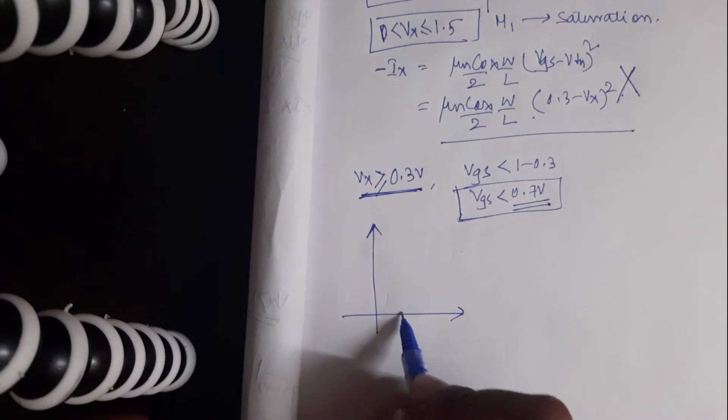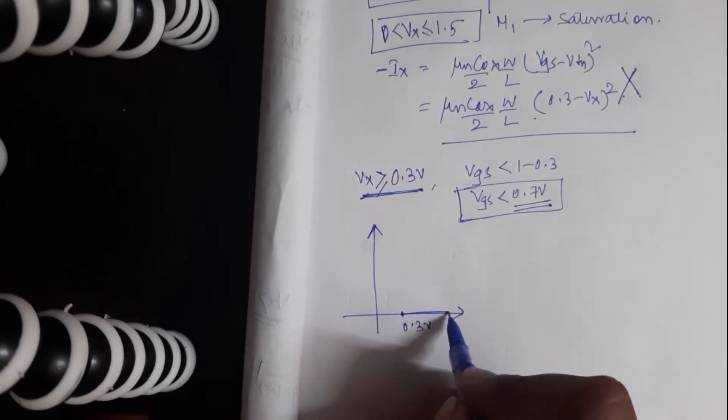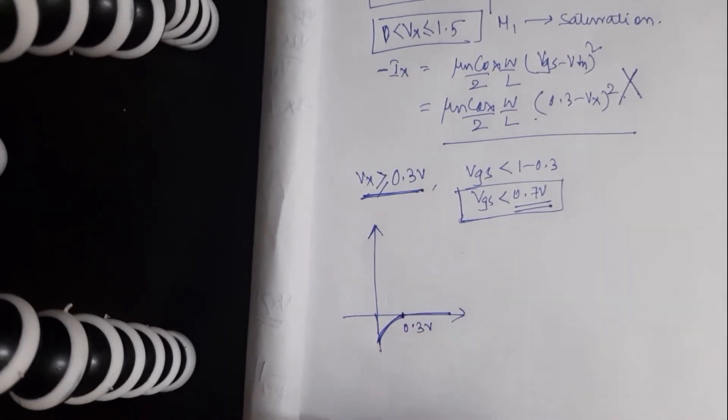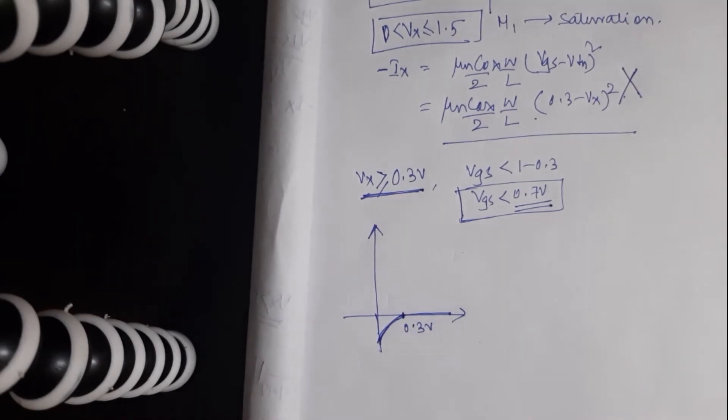At 0.3 volts the current should be 0. Before that we can have some current, it can be like this, it can be like a parabola, I'm not sure. So this is how the current looks like.